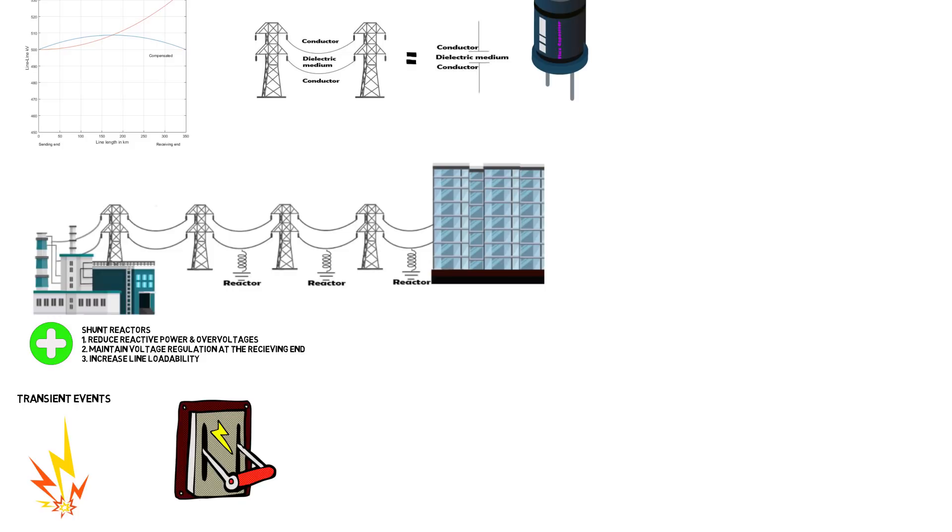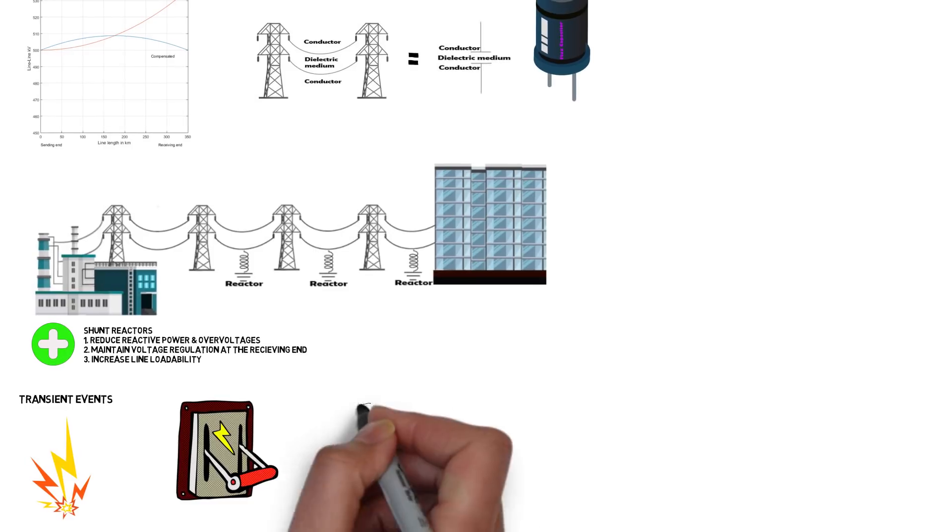However, as the line gets more heavily loaded, the reactors will reduce the line loadability if not removed. The transmission line constants in the MATLAB graph were outlined in a previous video where I compared the exact and approximate line model and showed that there is only a small difference between the two. See the description for the video link.